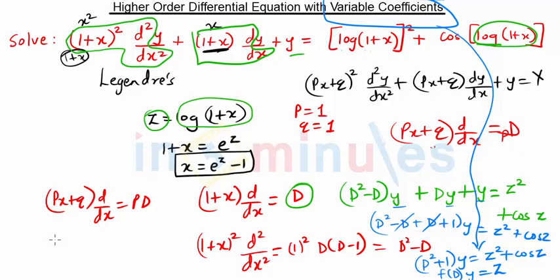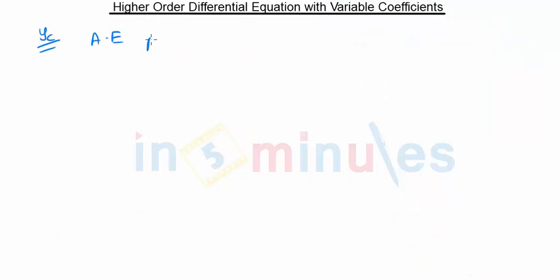The solution of this equation is given by y = yc + yp. First we will find yc. To find yc we need an auxiliary equation, for that we need f(d) = 0.